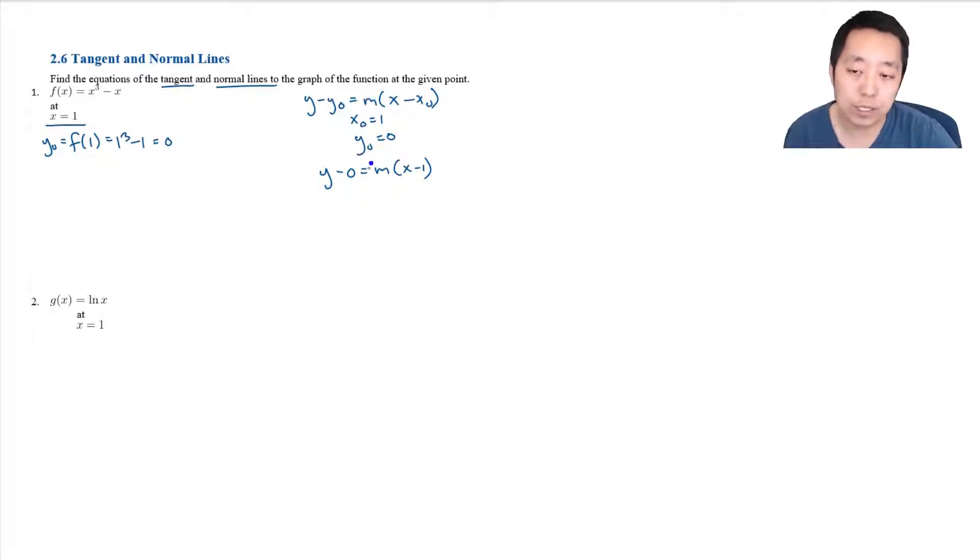The key part is to figure out what the slope is, and that is where the aspect of calculus comes into play. The tangent line is the derivative at this point, so m equals the derivative at 1. The derivative is 3x squared minus 1, so f prime of 1 equals 3 times 1 squared minus 1, which equals 2.